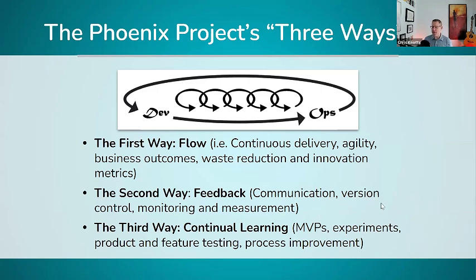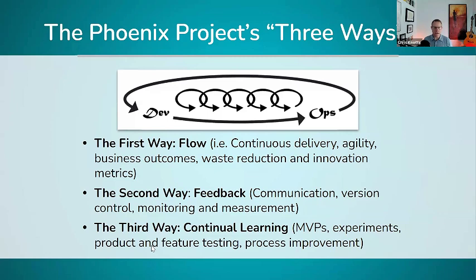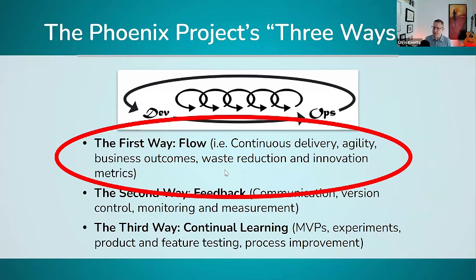From Flow, Gene moves on to Feedback — which is about communication, measuring how things behave, and getting feedback back upstream so we learn lessons. That leads to the third way, Continual Learning — and he doesn't mean abstract learning; he's talking about actually setting up disciplined, scientific ways to perform experiments, collect data, do A/B testing, so we can understand and learn at a technical level what does well and what we can improve. The first way — Flow — is really what we're focused on for today.